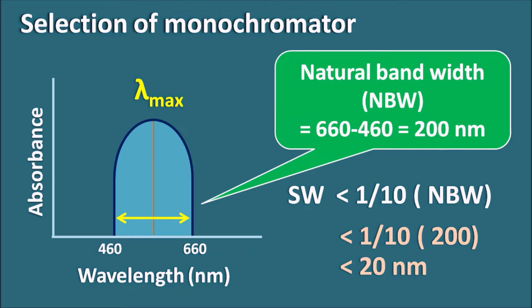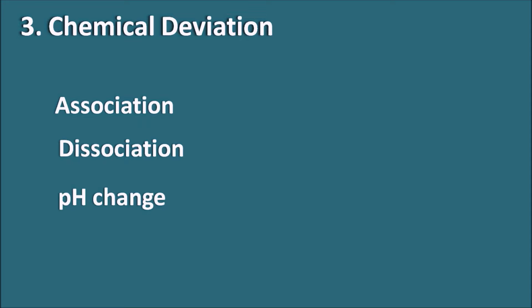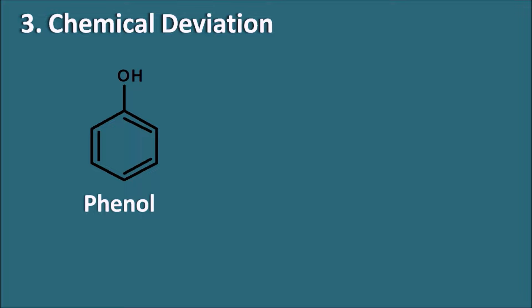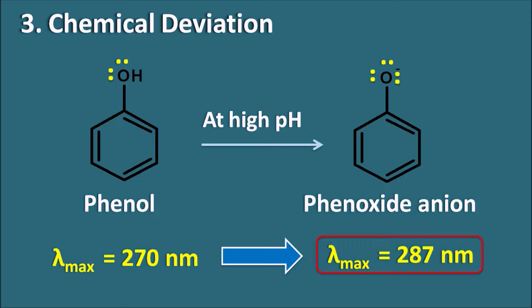The third type of deviation is the chemical deviation, which is observed because of any association, dissociation, or pH change within the sample — any of these processes can result in a change in absorptivity. When absorptivity changes, we observe a deviation from the Beer-Lambert law. For example, when analyzing phenol: phenol has two lone pairs of electrons, but at alkaline pH, phenol can be present as phenoxide anion, which has three lone pairs of electrons. Because of this, the phenoxide anion has a greater auxochromic effect, showing an increase in absorptivity. Phenol shows lambda max at 270 nm, whereas phenoxide anion shows lambda max at 287 nm — a bathochromic shift with increased absorptivity.